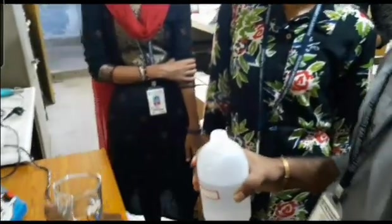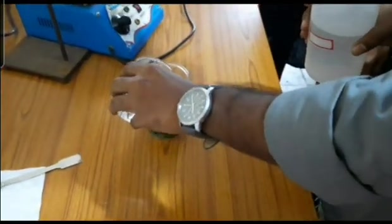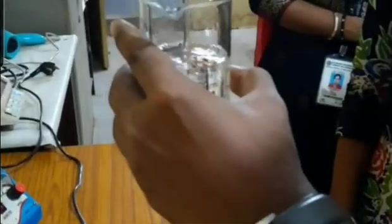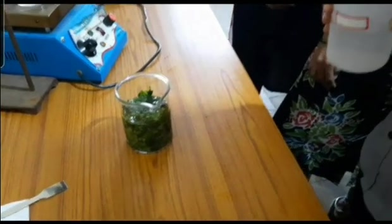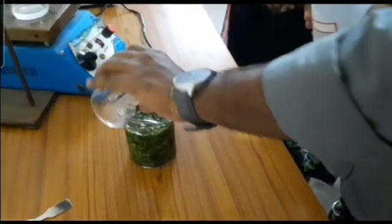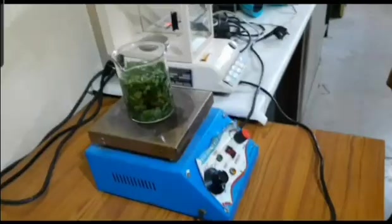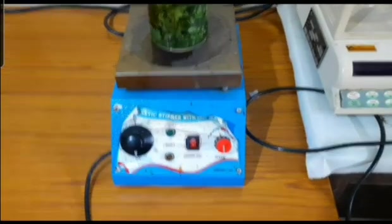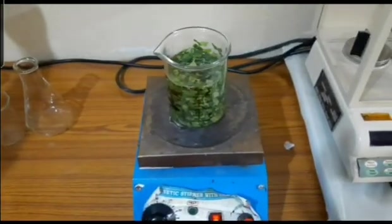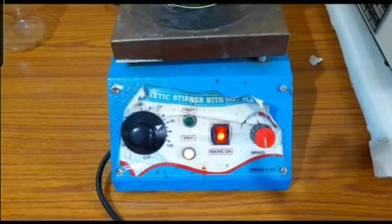We have to take 250 ml of distilled water. We have to dissolve 50 grams of leaves in 250 ml of distilled water. After that we have to heat it for 60 to 80 degrees celsius for 45 minutes on magnetic stirrer.